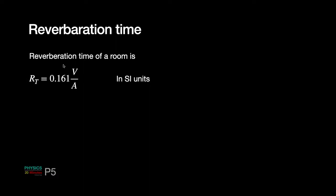The reverberation time RT is given by Sabine's formula: RT = 0.161 × V / A, where V is the volume in cubic meters and A is in square meters (SI units). If you change units, for example to feet, the coefficient value will change — be careful. This is called Sabine's formula, and if you are mathematically interested, the derivation is very elegant, though we are not going into it here.